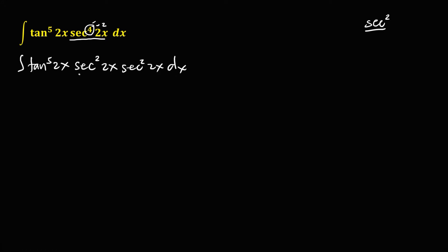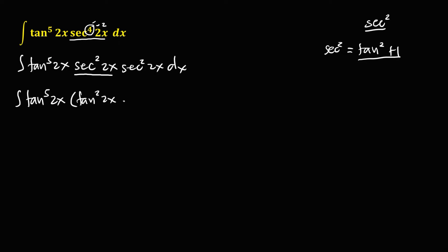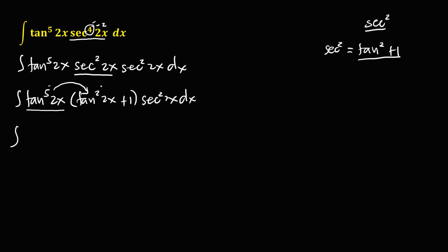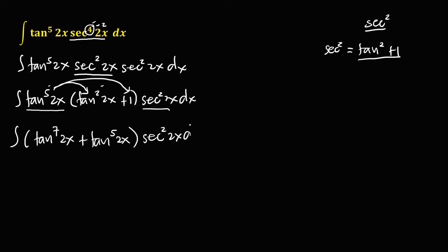Then we continue working on secant squared using the identity that secant squared equals tangent squared plus 1. So this becomes the integral of tangent to the power 5, 2x, times (tangent squared 2x plus 1), times secant squared 2x, dx. Distributing tangent to the power 5, 2x — adding exponents — gives tangent to the power 7, 2x, plus tangent to the power 5, 2x, times secant squared 2x, dx.